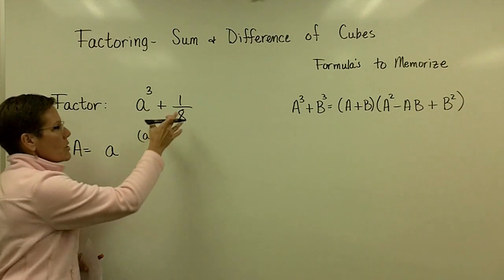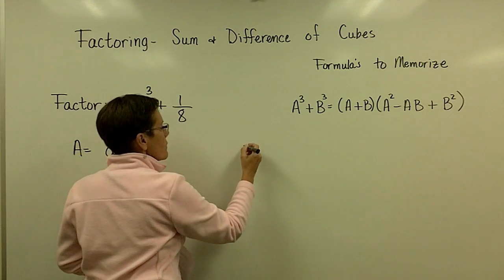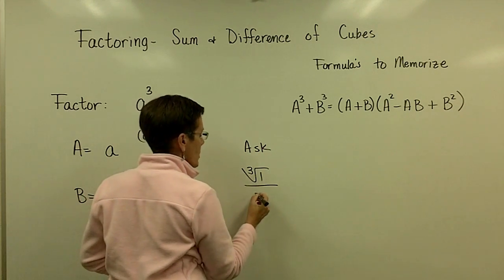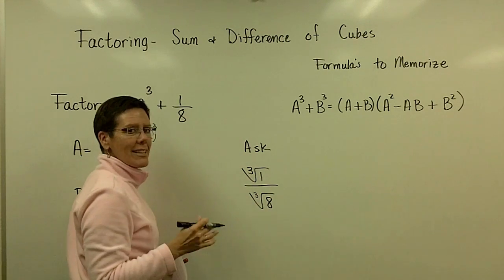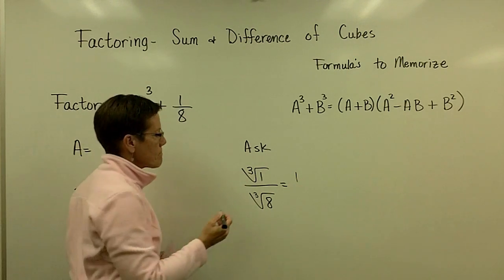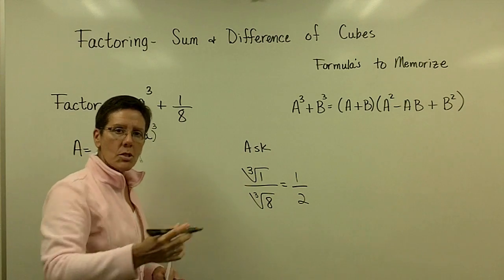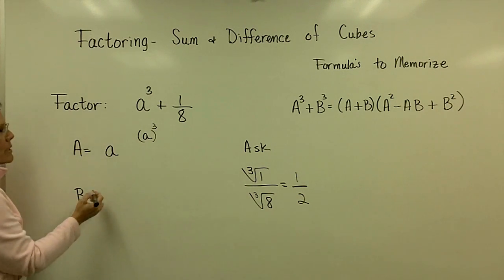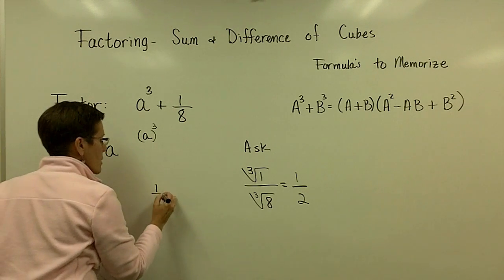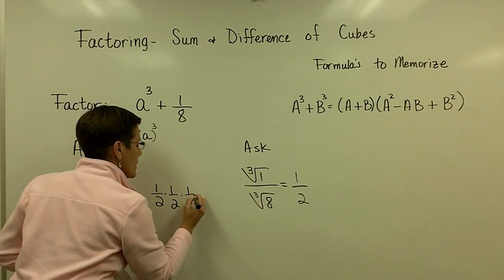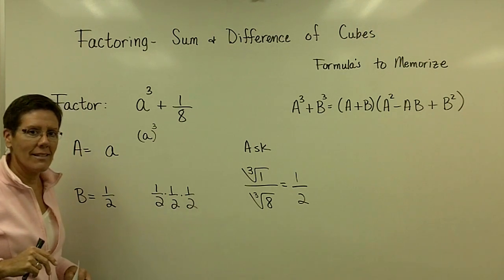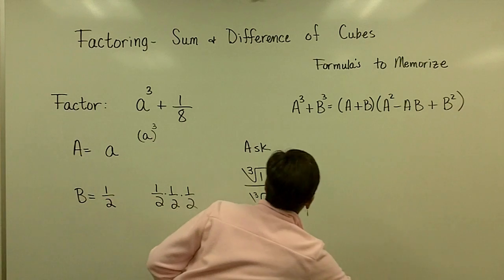When you have a fraction, one of the things you can do is ask yourself, what's the cubed root of 1? Because that's in the numerator of this fraction. And what is the cubed root of 8? That's the way you can kind of break it up into parts. And the cubed root of 1 is the number 1 because 1 times 1 times 1 is 1. And the cubed root of 8 is 2 because 2 times 2 times 2 is 8. So my B value in this problem is the fraction 1 half, because 1 half times 1 half times 1 half is in the numerator 1 and in the denominator 8. That part is challenging sometimes.